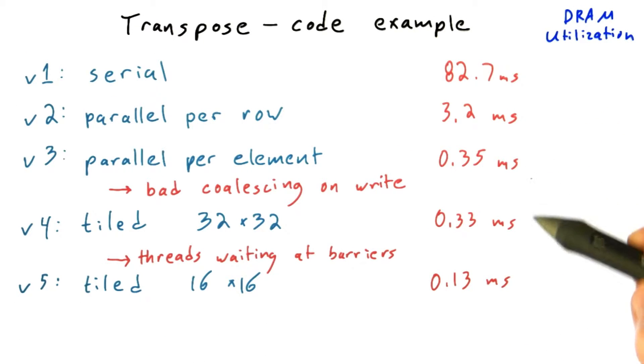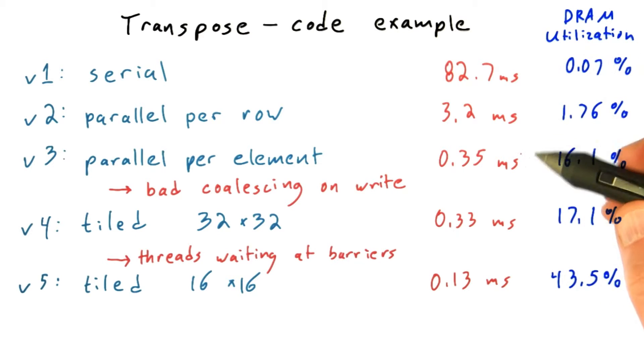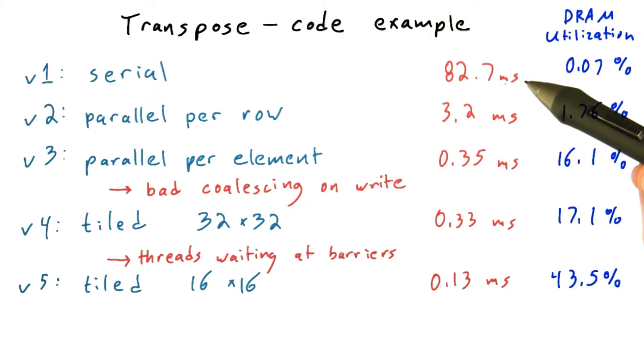Here I've written those results down again, and now we can fill in the DRAM utilization. You can see the same pattern - the serial version running in a single thread takes 82.7 milliseconds. As we get more parallel, we move into single milliseconds, then sub-millisecond. By the time we get here, we're running quite well at 0.35 milliseconds.